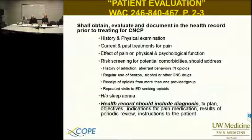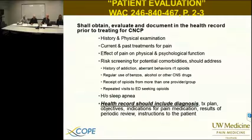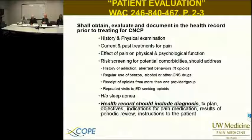This is what Washington State regulations require. In your risk screening for comorbidities, you address a history of addiction and aberrant behaviors relative to opioids, regular use of benzos, alcohol, or other CNS-sedating drugs, receipt of opioids from more than one provider or group — i.e., check the prescription monitoring program — and evaluate whether there are repeated emergency department visits seeking opioids, which would be referred to your patient care agreement. Presence of sleep apnea. The health record should include a diagnosis, a treatment plan, objectives of your treatment plan, what your goals are, indications for the pain medications, results documented based on your periodic review, and instructions to the patient. This really should apply to any condition we treat, but is specifically called out in Washington State.